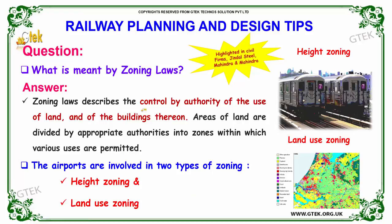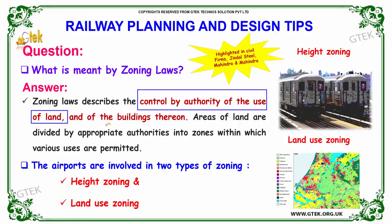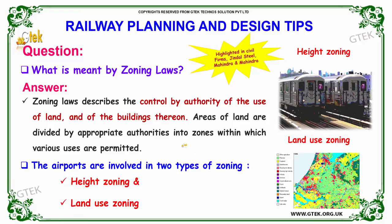The next question: what is meant by zoning laws? Zoning laws describe the control by authority of the use of land and of buildings. Areas of land are divided by appropriate authorities into zones within which various uses are permitted. Airports are involved in two types of zoning: height zoning and land use zoning.